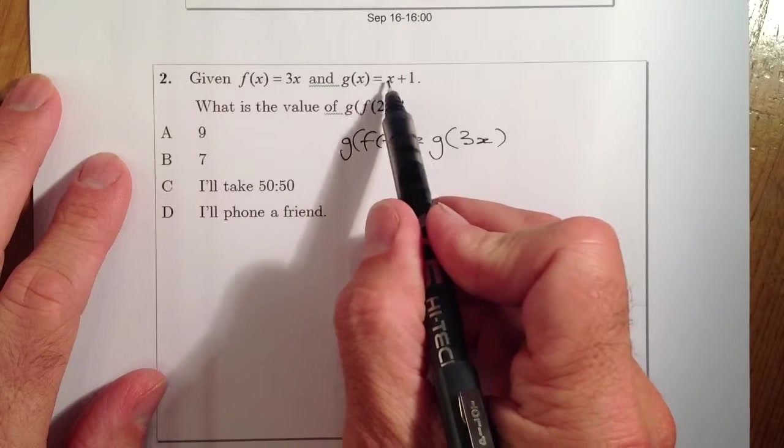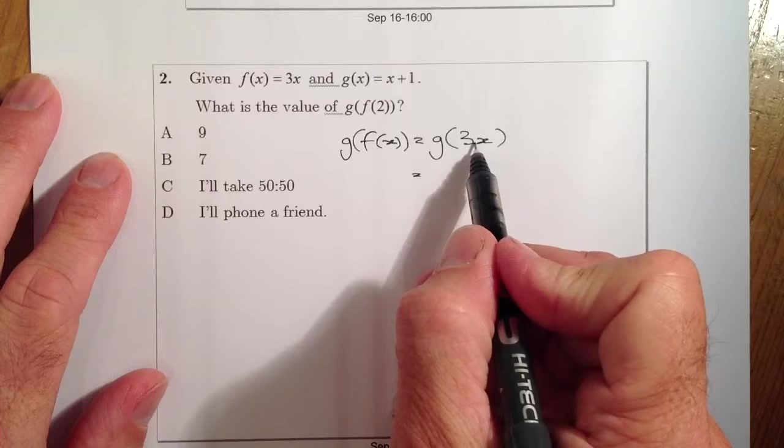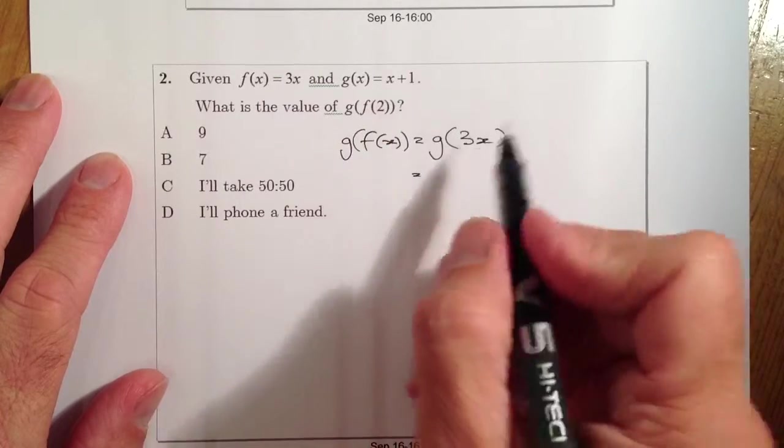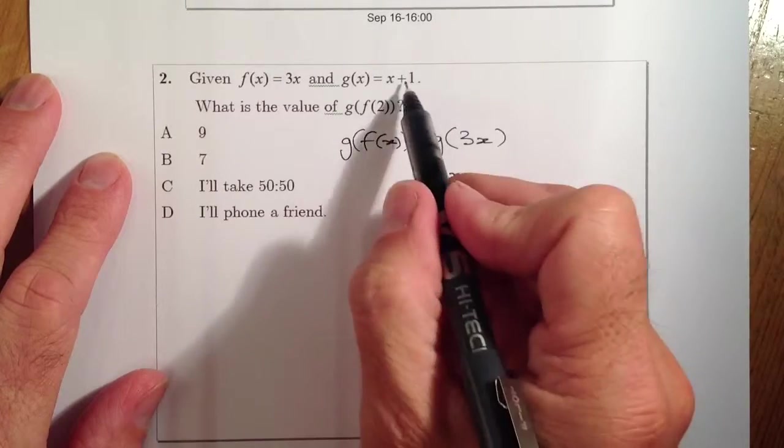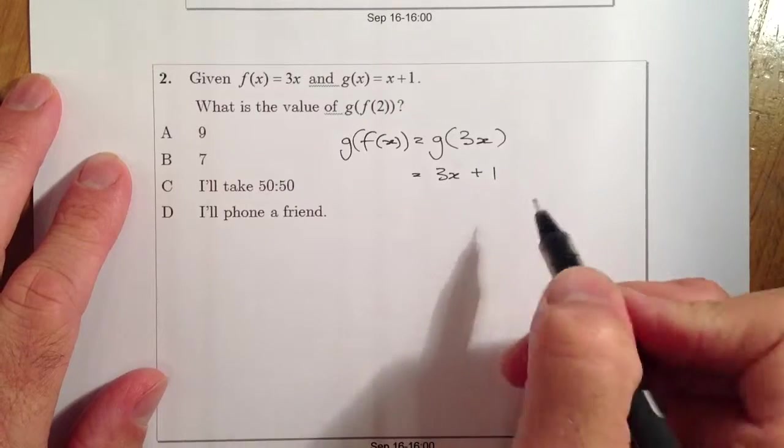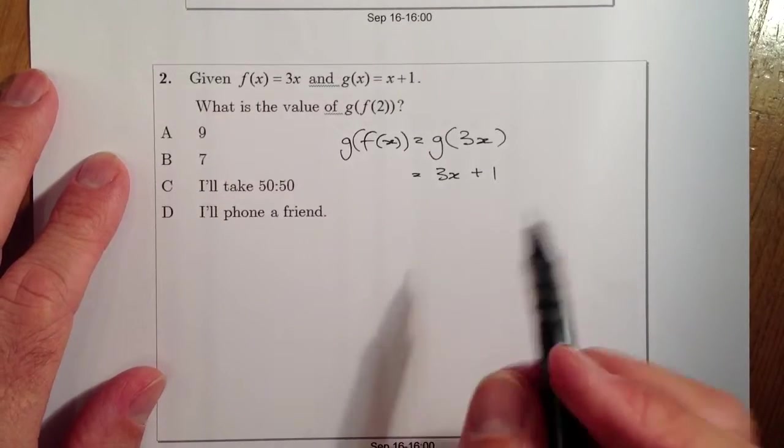So wherever I see x in the bracket, the x goes there. If I've got 3x in the bracket, 3x will go in there. So there's 3x, and the plus 1 after it would be the plus 1 there. So there's the function that I've got for g of f of x.